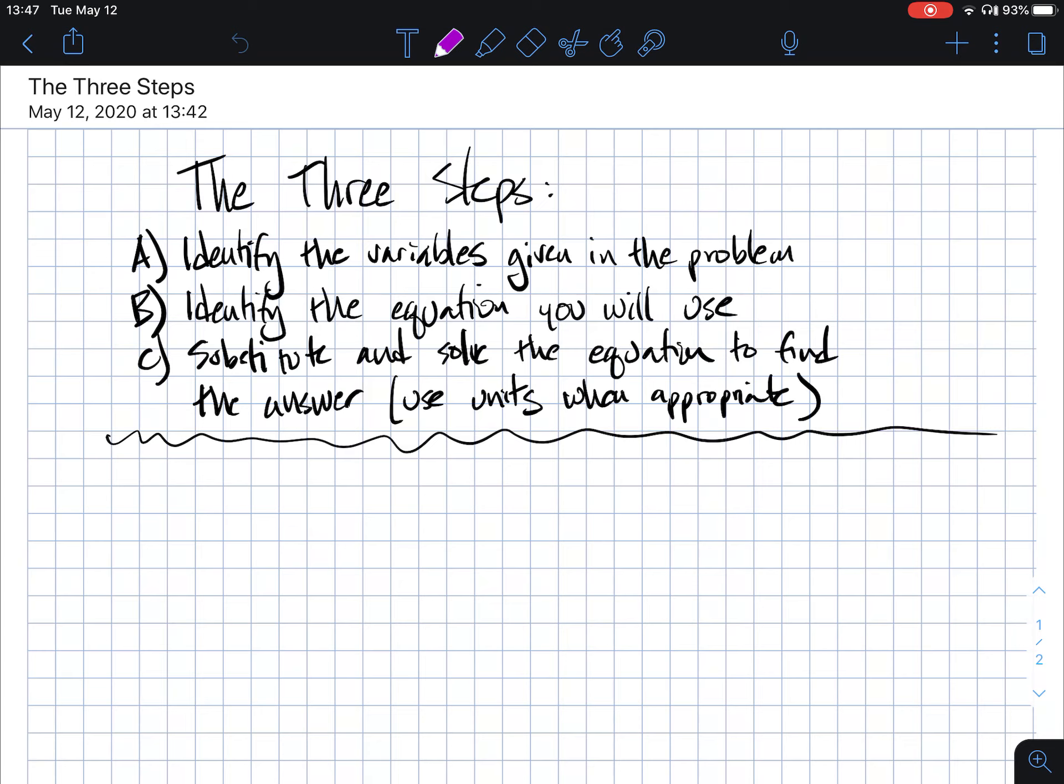The very last problem asked you to find the kinetic energy of a bowling ball that had a mass of 4.8 kilograms and a velocity of 7.6 meters per second. So the variables given in the problem are the mass of the bowling ball. So I'm going to write mass equals 4.8 kg. And you should do that too.